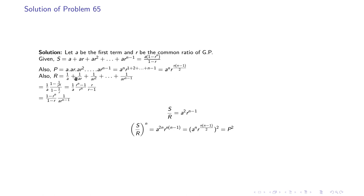The sum of reciprocals R = (1/a) + (1/ar) + ... + (1/arⁿ⁻¹), which gives R = (1 − rⁿ)/((1 − r) · arⁿ⁻¹). When we compute S/R, the (1 − rⁿ) and (1 − r) terms cancel, leaving S/R = a² · rⁿ⁻¹.